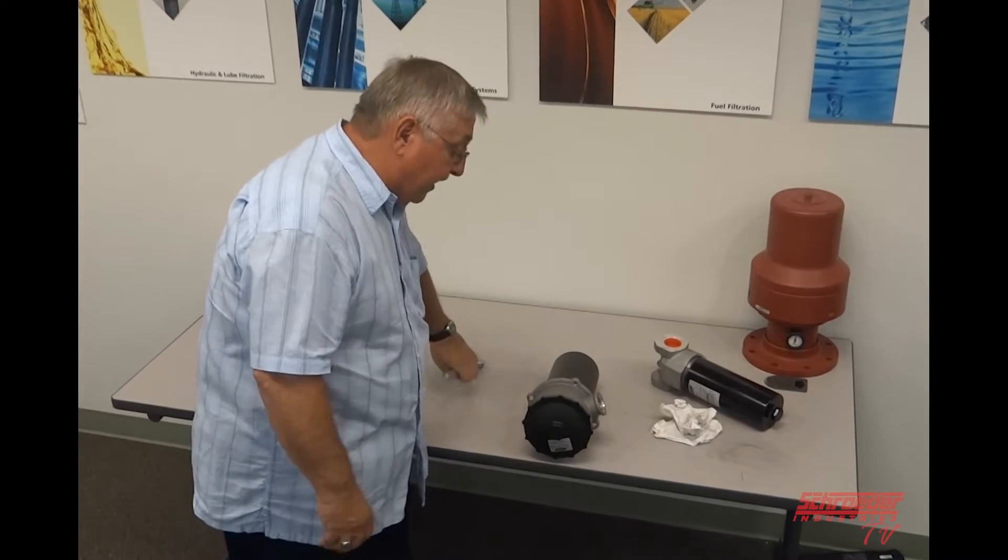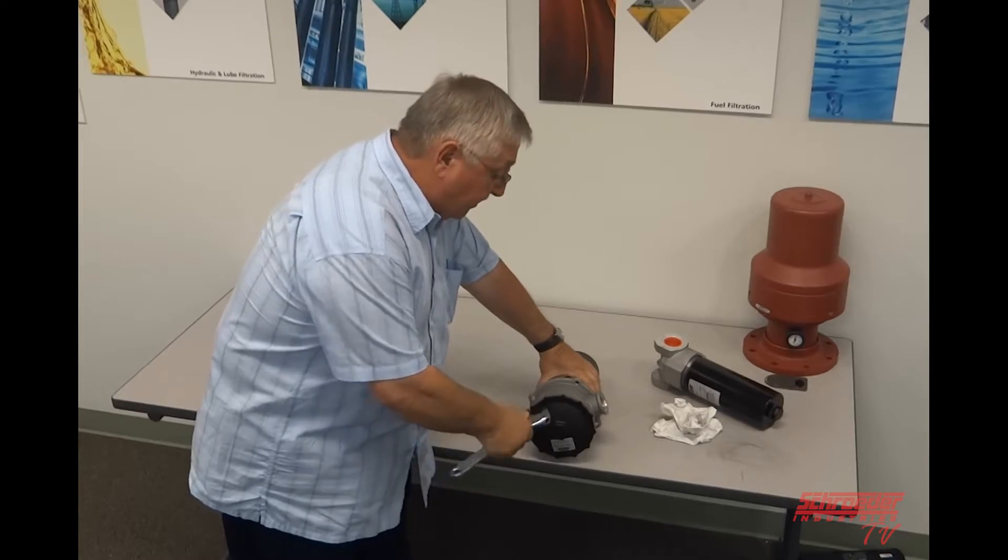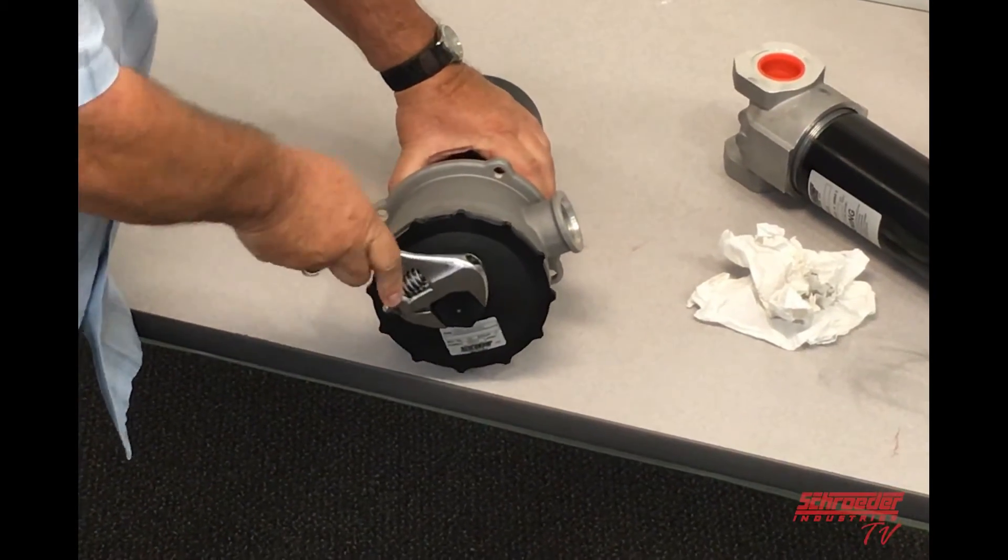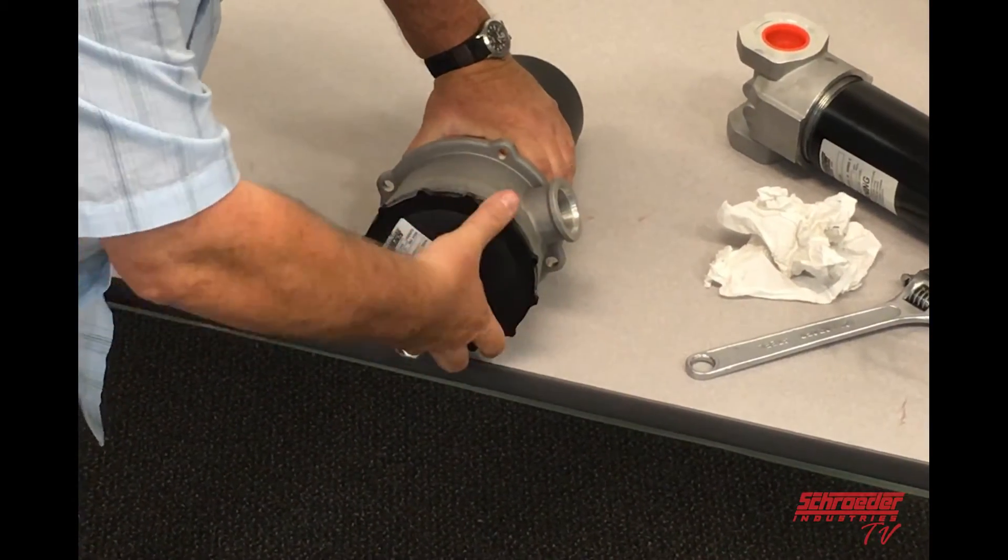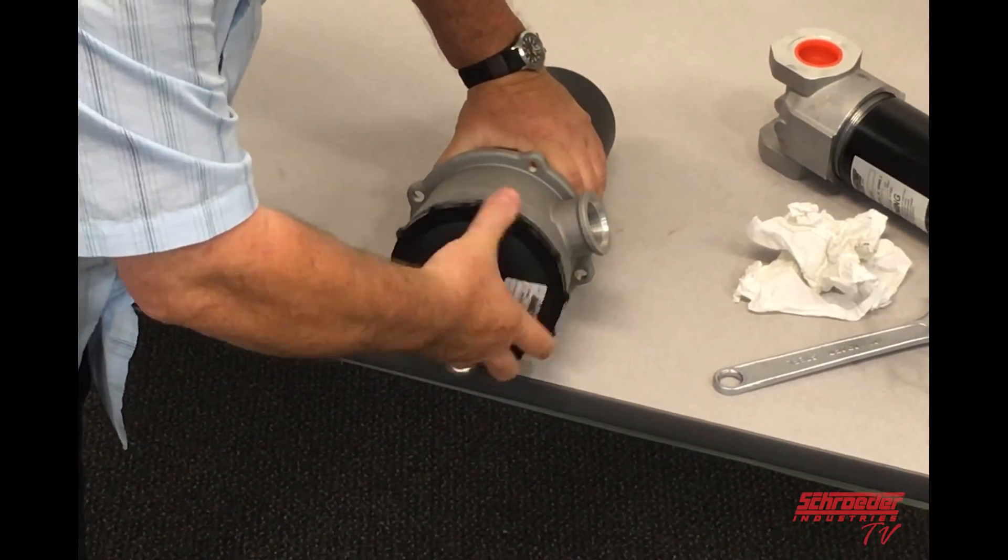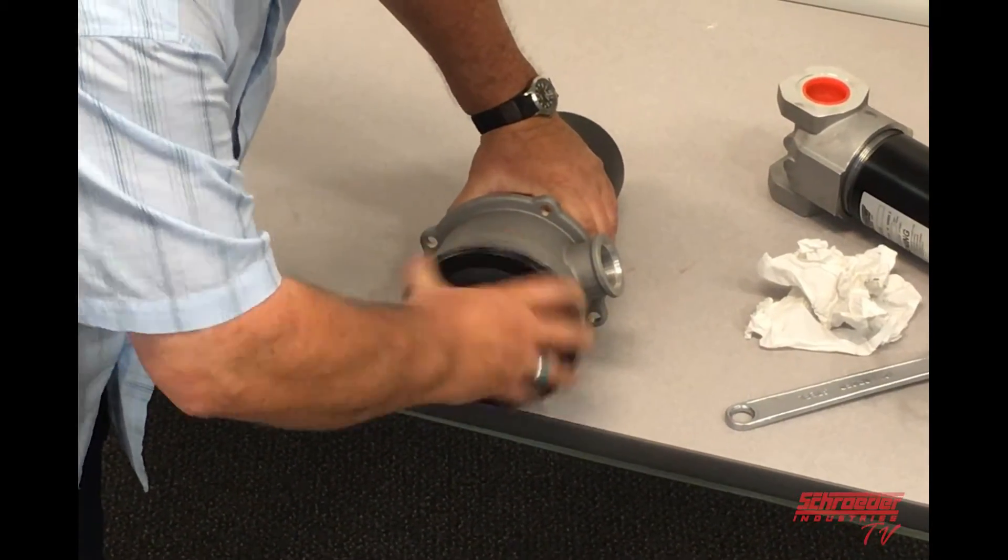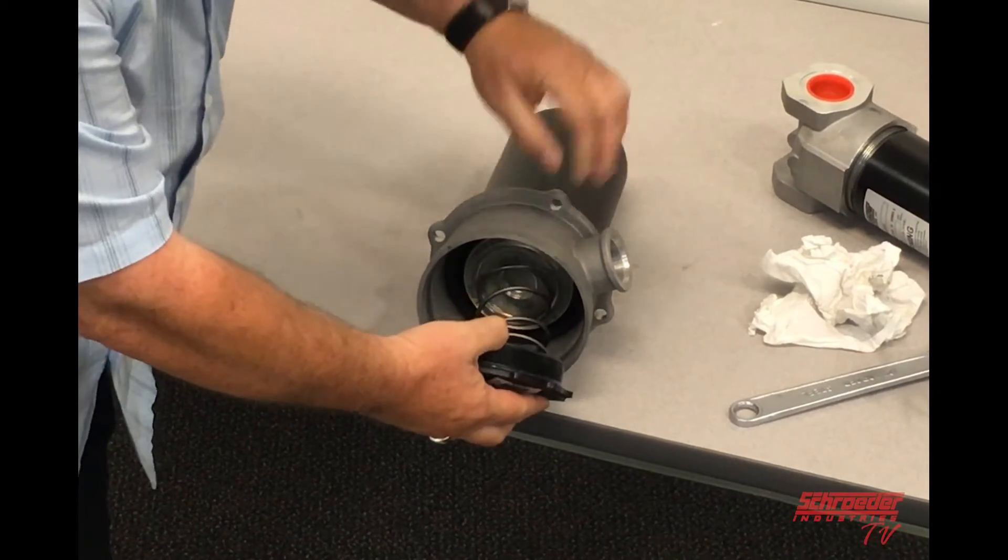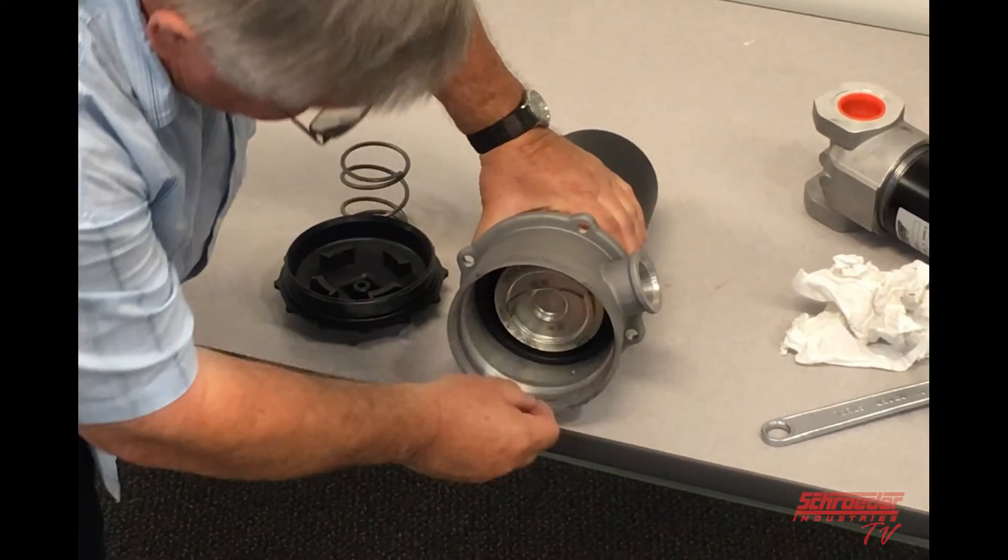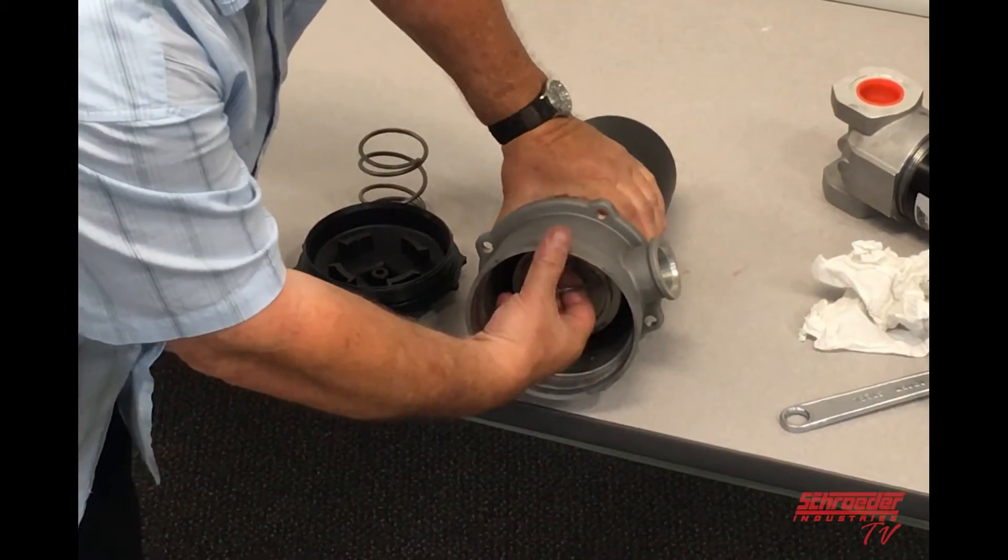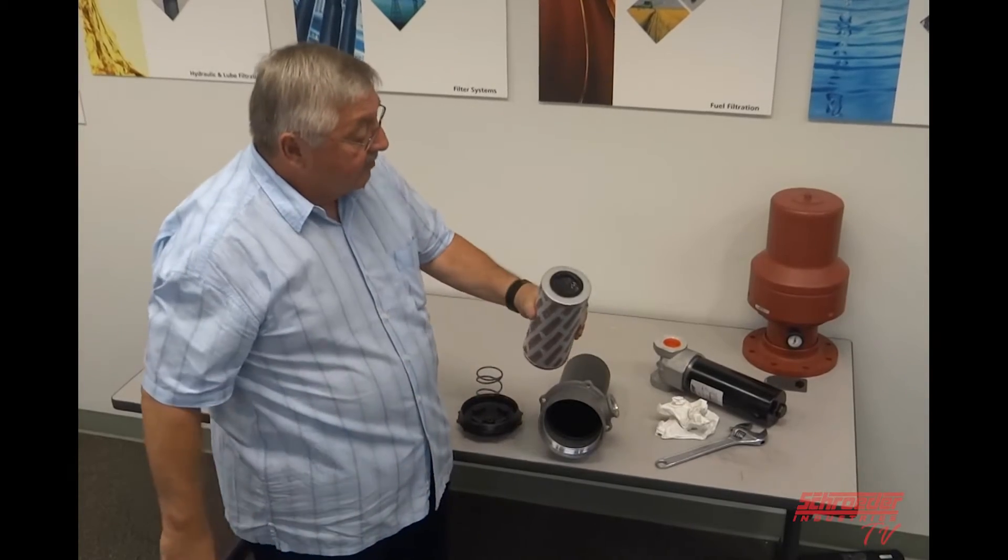This cap needs to be unscrewed. Again, it's got a hex on top of it. You need to find a crescent wrench or an open end or a socket, whatever you have. Turn the head here counterclockwise and just unscrew the head or the cap from the head very simply like this. As you notice, we've got the cap and there's a spring inside that holds the element. You reach in here, there's a little bail on the element, and you can pull the element off the guide tube that's in there and you replace this element.